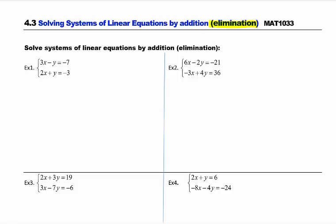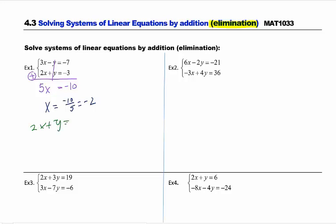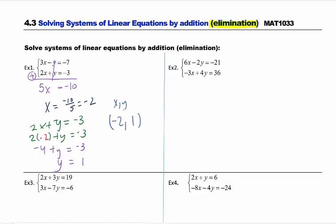We're going to start with Example 1. It's already set up so that if I add the two equations, I get 5x, the y's cancel, and I get negative 10. Your goal with elimination is to get an equation with one variable that we know how to solve. Dividing both sides by 5 gives x equals negative 2. Don't fall into the trap — make sure you finish the problem by plugging back into one of the original equations. Using 2x plus y equals negative 3, I plug in x equals negative 2 to get negative 4 plus y equals negative 3. Adding 4 to both sides gives y equals 1. So the answer is the ordered pair negative 2 comma 1.